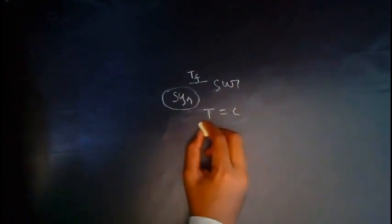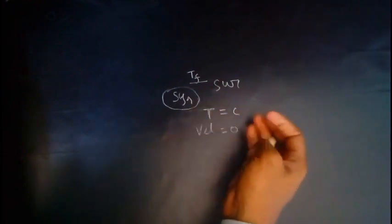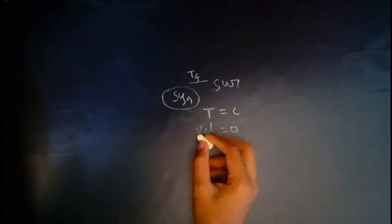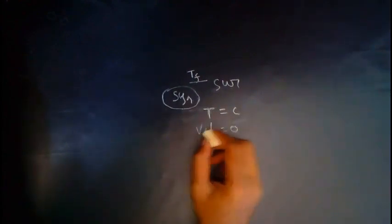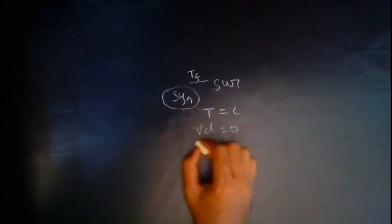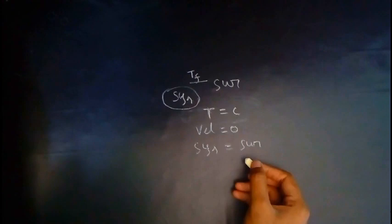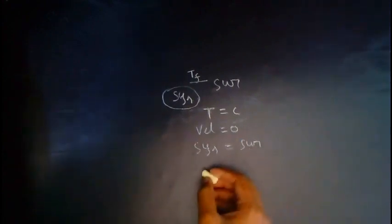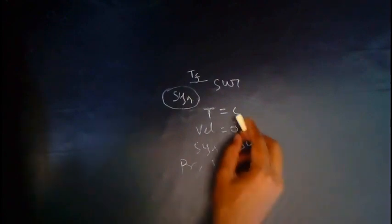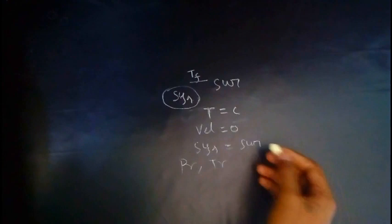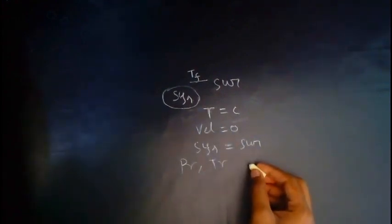At this state, the velocity will be zero. Since the system and surrounding are now at the same temperature, there will not be any work transfer or energy transfer — the energy transfer is also zero. The state at which both the system and surrounding become equilibrium is known as the dead state. This dead state is the final state at which the system arrives.